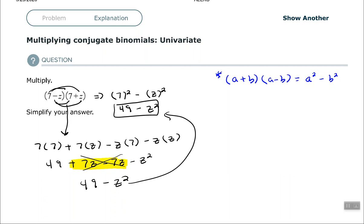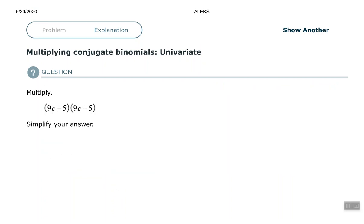Okay. So let's try one more of those. All right. So this time we have (9c - 5) times (9c + 5). Again, using our rule that says we multiply conjugates, then the result is the first term squared minus the second term squared.